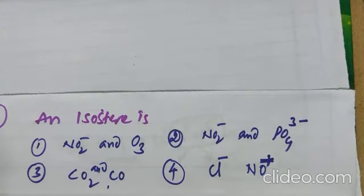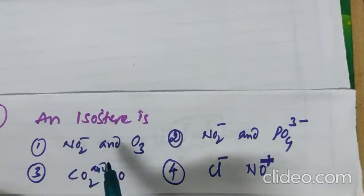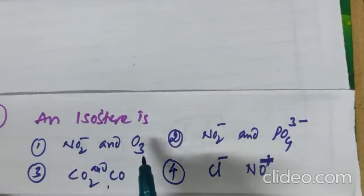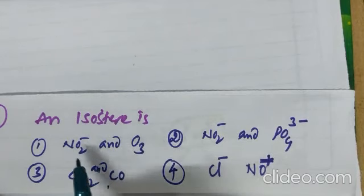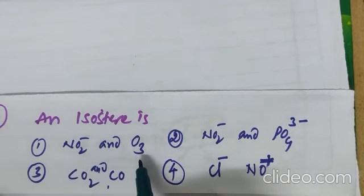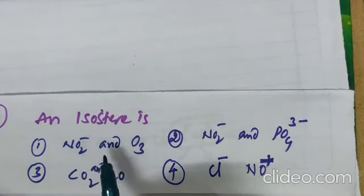Many times, repeated this type of question. Isosteres. Atomicity, same. And, number of electrons. Here, NO2 minus. N plus O2. 1 nitrogen, 2 oxygens. Total, 3. Here, also, 3. Atomicity, same for the first option.